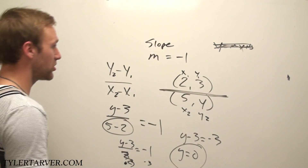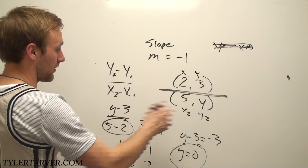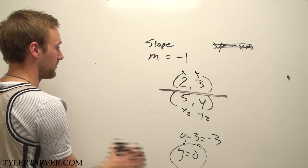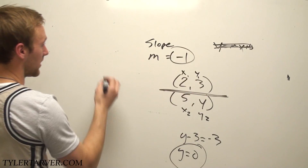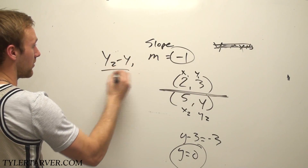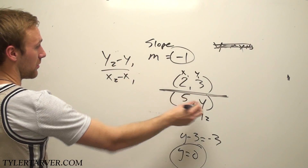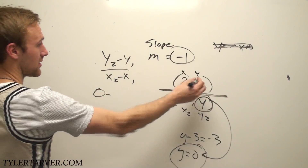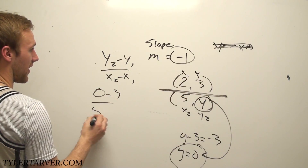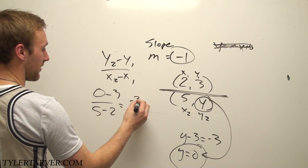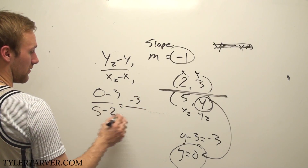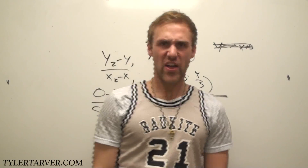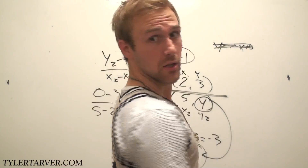Now, do you want to check it? Sure, you can check it. Plug your stuff in and redo the problem to make sure we did it right. We want the slope to be negative 1. It's y2 minus y1 over x2 minus x1. We said y is 0, so it's 0 minus 3 over 5 minus 2 — that's negative 3 over 3, which simplifies to negative 1. That's what we want, and that's what we got. That's the finish of the problem.